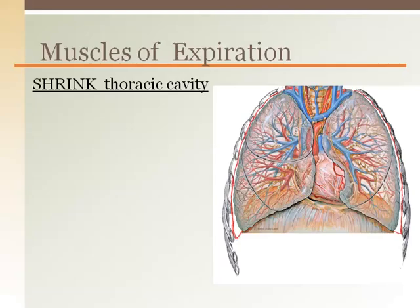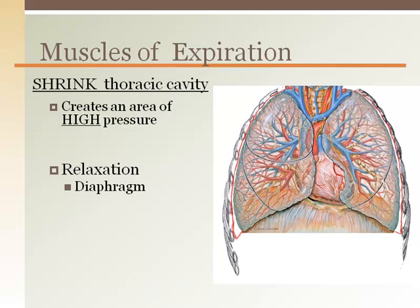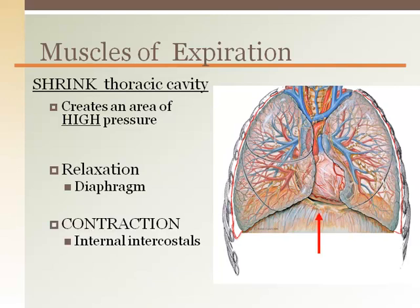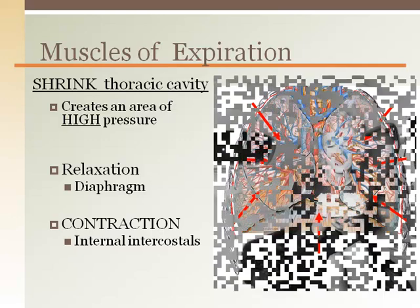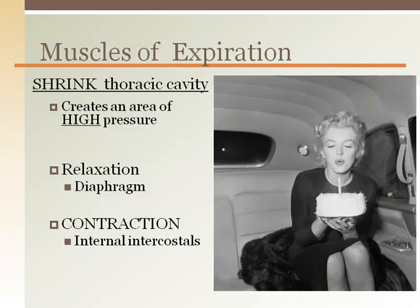Expiration is the act of creating a smaller space to push air out of the lungs. This is done with the relaxation and recoil of the diaphragm and contraction of the internal intercostal muscles, which are found between the ribs on the inside of the chest wall. You can also buckle over, pushing on your abdominal cavity, aiding the lift of the diaphragm to push out even more air if you need to blow out your birthday candles.